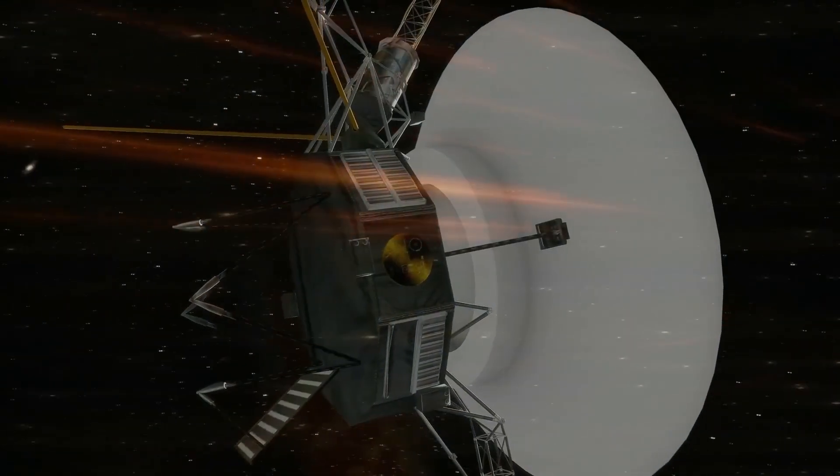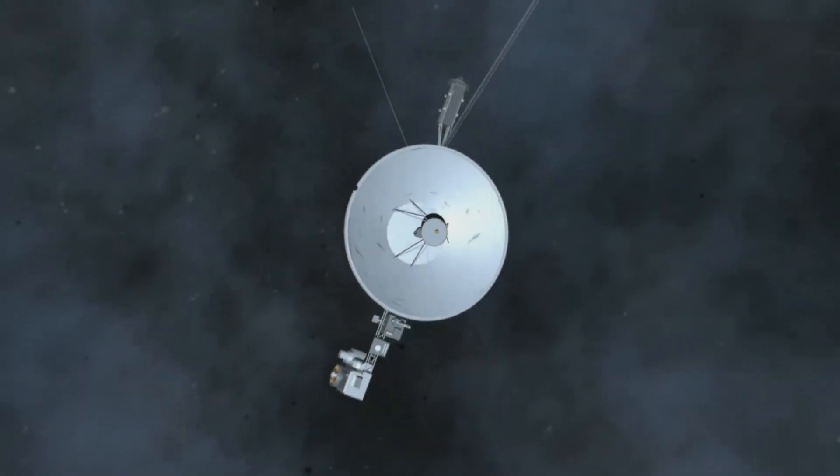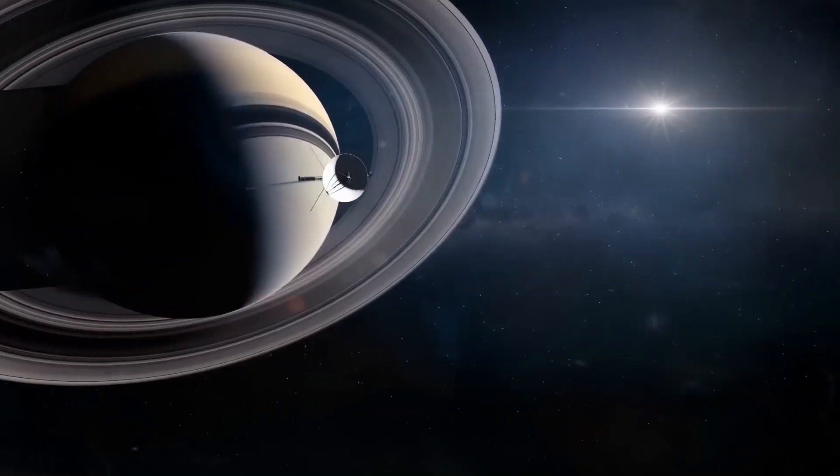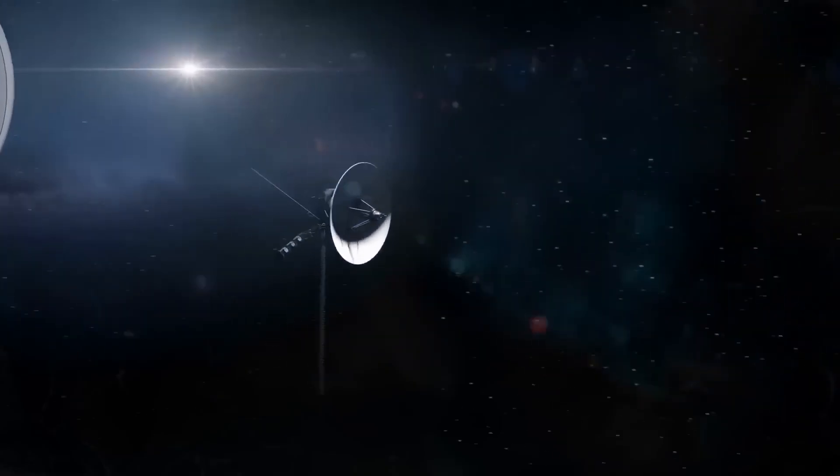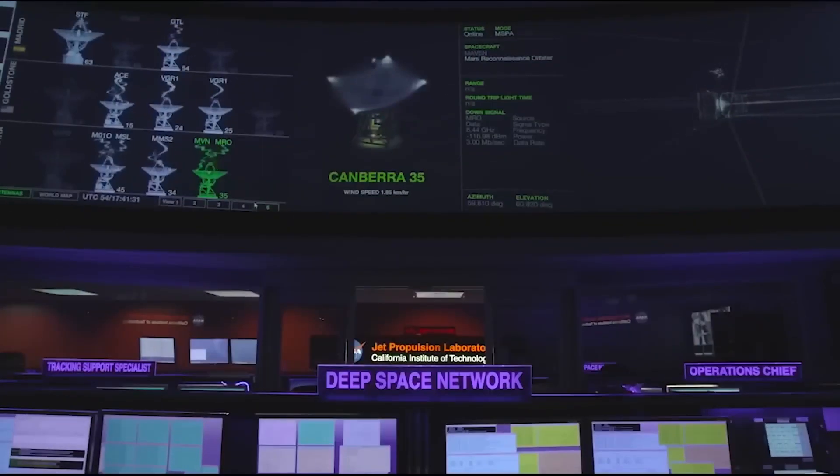The journey to Jupiter took the spacecraft ten times the distance Mercury is from Earth and forced them to pass through the dangerous asteroid belt, a feat previously tackled by Pioneer 10 and 11 probes. But the challenges didn't end there.